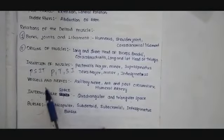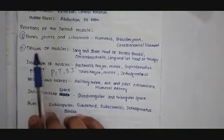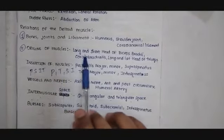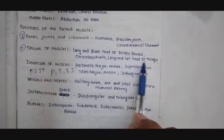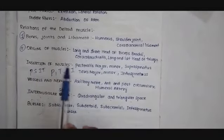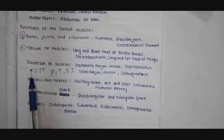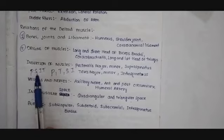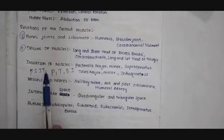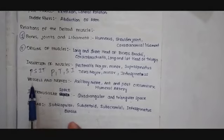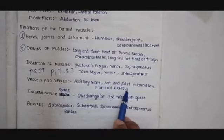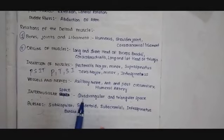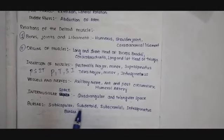This deltoid muscle is also related to the following structures. At the origin of the muscle, it is related to the long and short head of biceps brachii, coracobrachialis, and the long and lateral head of triceps. At the insertion of the muscle, just try to remember P-S-I-T: P stands for pectoralis major and minor, S stands for supraspinatus, I stands for infraspinatus, T stands for teres major and minor. Next, the vessels and nerves: axillary nerve, anterior and posterior circumflex humeral artery. Intermuscular spaces: quadrangular space and triangular space. And bursae: subscapular bursa, subdeltoid bursa, subacromion bursa, and infraspinatus bursa.